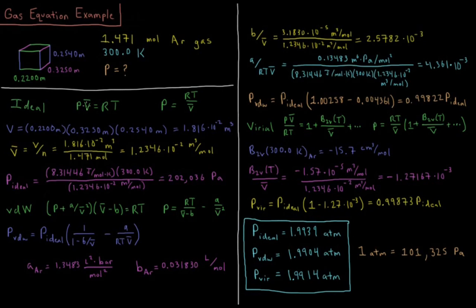For the Ideal Gas Law, pressure times molar volume equals gas constant times temperature. So P equals RT over V bar, once we move V bar to the other side.